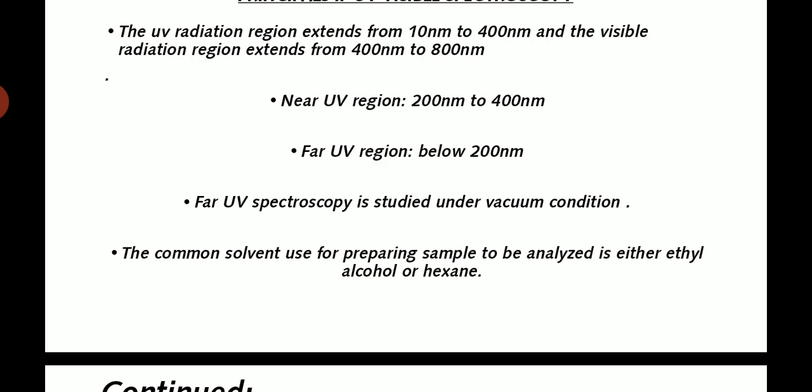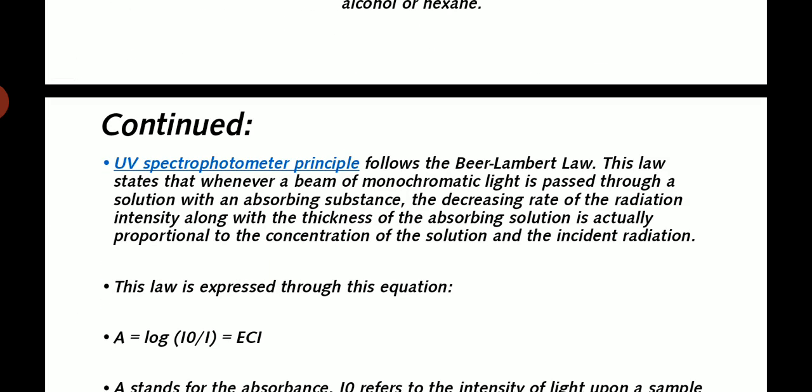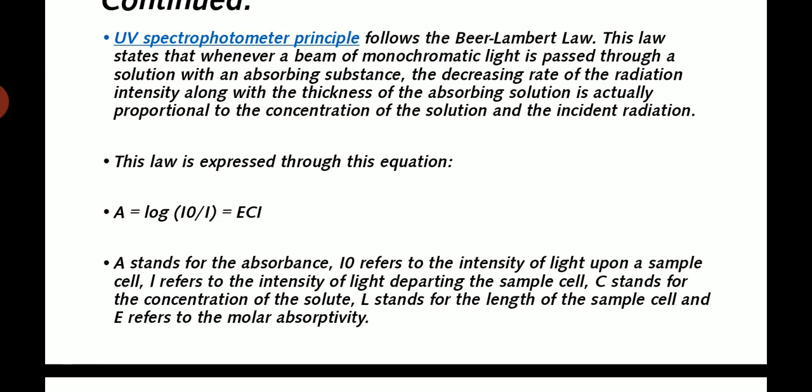The common solvent used for preparing samples to be analyzed is either alcohol or hexane. UV spectrometer principle follows the Beer-Lambert Law. This law states that whenever a beam of monochromatic light is passed through a solution with an absorbing substance, the decreasing rate of the radiation intensity along with the thickness of the absorbing solution is actually proportional to the concentration of the solution and incident radiation. This law is expressed through this equation: A equals log I0 over I equals ECL. A stands for the absorbance, I0 refers to the intensity of light upon a sample cell, I refers to the intensity of light, C stands for concentration of solute, L stands for the length of sample cell, and E refers to the molar absorptivity.